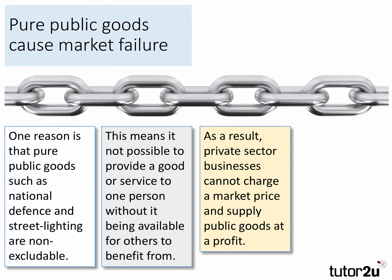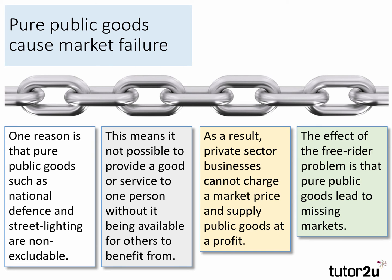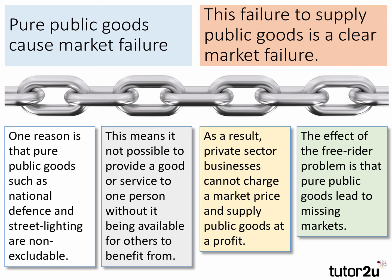As a result, private sector businesses cannot charge a market price and therefore cannot supply public goods at a profit. The effect of the free rider problem is that pure public goods lead to missing markets. So do you see how we've created a chain of reasoning using a series of relatively short sentences? This failure to supply public goods is a clear market failure.